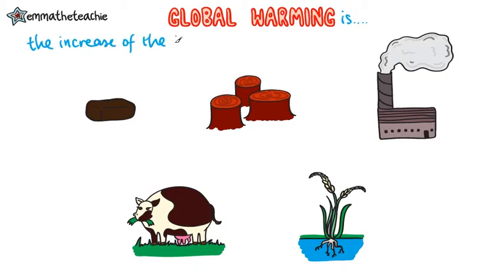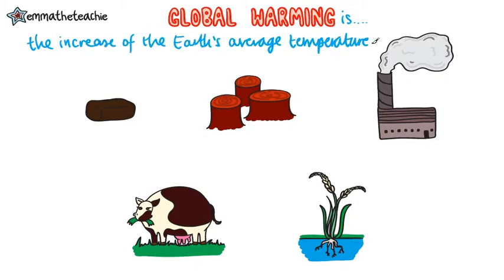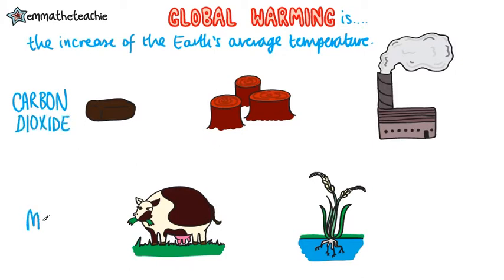Global warming is the increase of the Earth's average temperature. It's caused by two gases: carbon dioxide and methane.